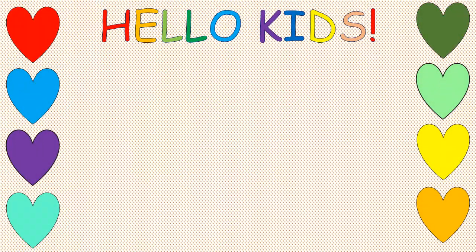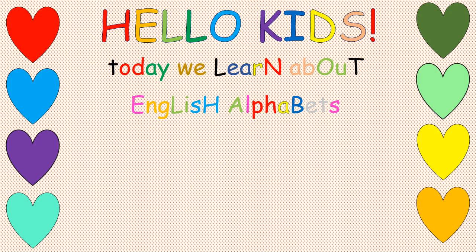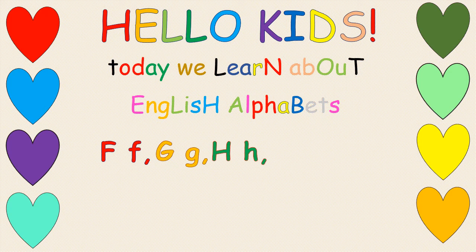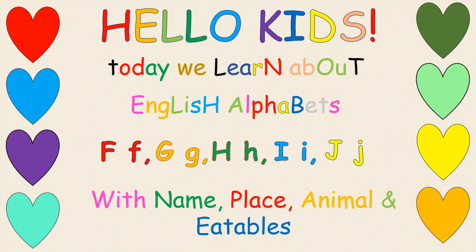Hello kids! Welcome back! Today we learn about English alphabets. The English alphabets we learn about today are F, G, H, I and J, with name, place, animal and eatables. So let's see what we are going to learn about today.